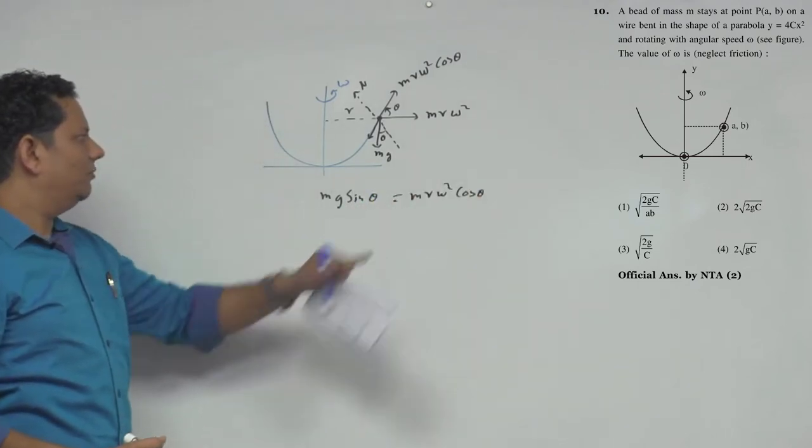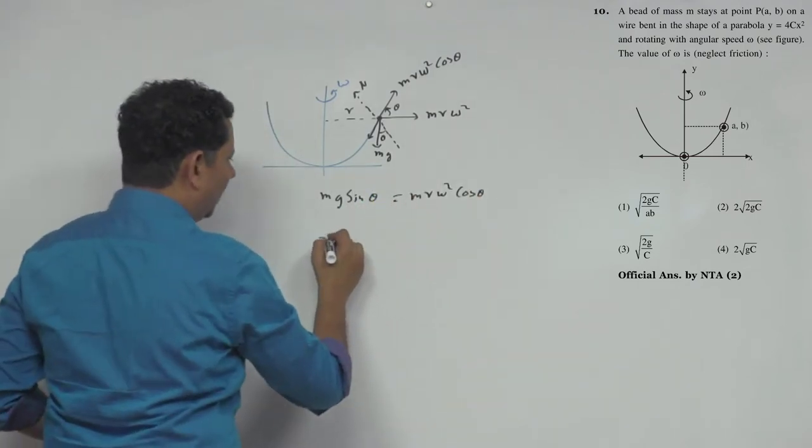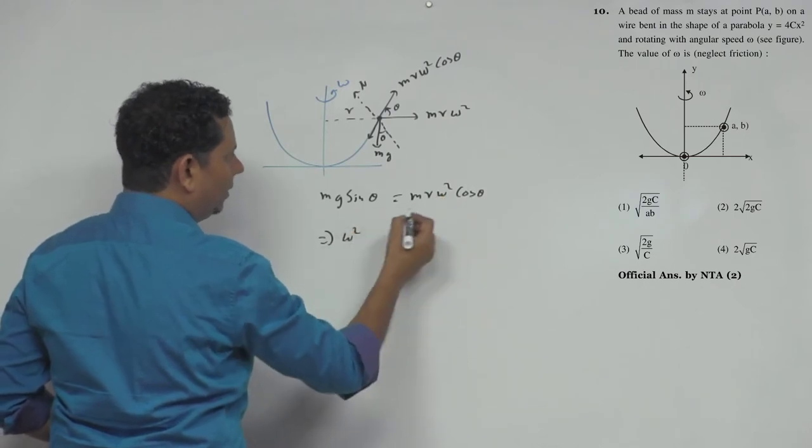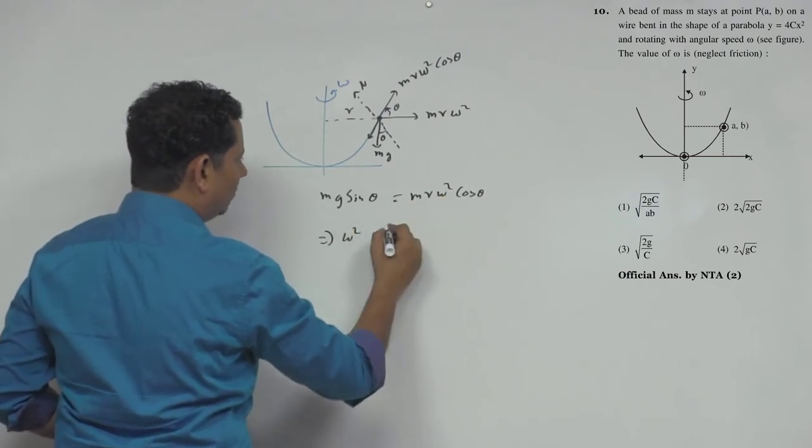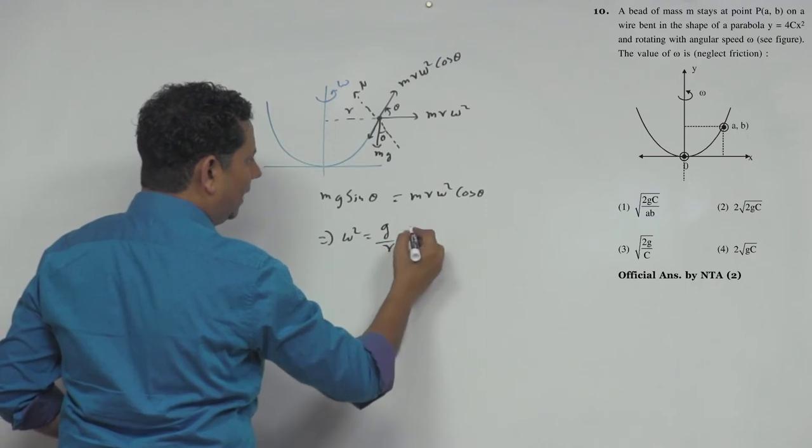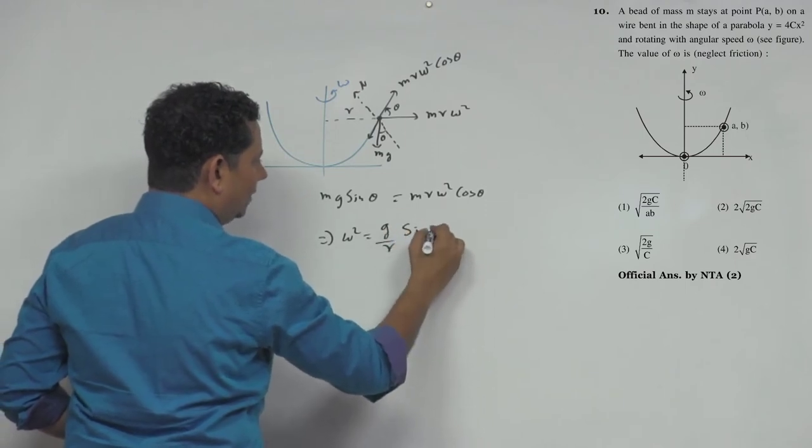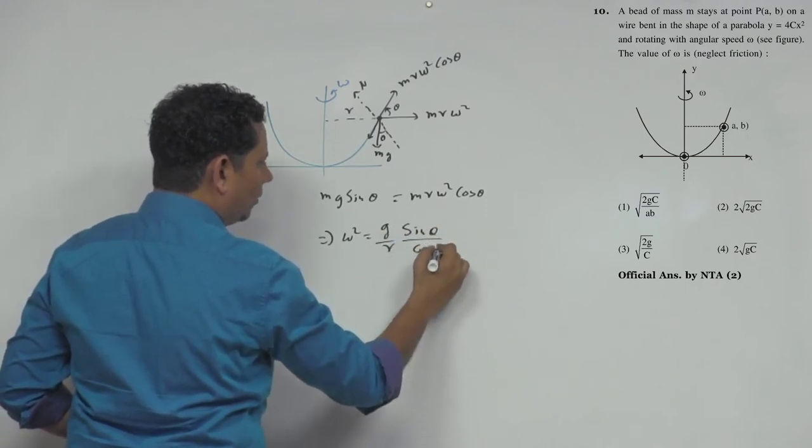Which implies ω² = (g/r) × (sin θ / cos θ).